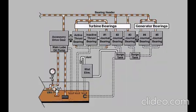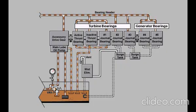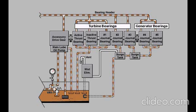After lubricating the accessory drive gear and the turbine number 1 bearing, lube oil drains directly back into the lube oil tank. Lubricating oil from turbine number 2 and number 3 bearings and from the generator bearings drains into surge tanks located in the turbine base. The forward surge tank drains into the lube oil tank.